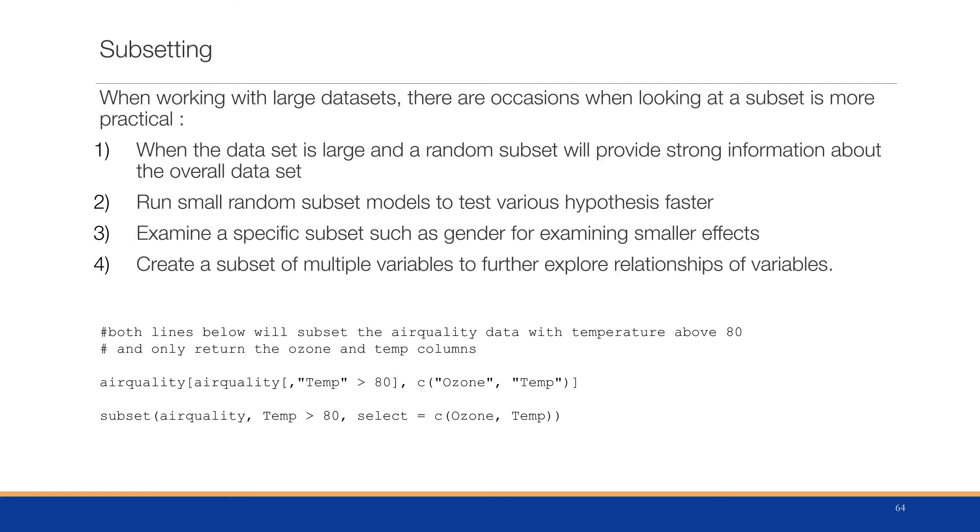We can run small random subset models to test various hypotheses faster. It may take a little bit longer to run a model with a million rows than it does with say 20,000 rows, but we should get similar results. And we can even run smaller subsets three or four times.